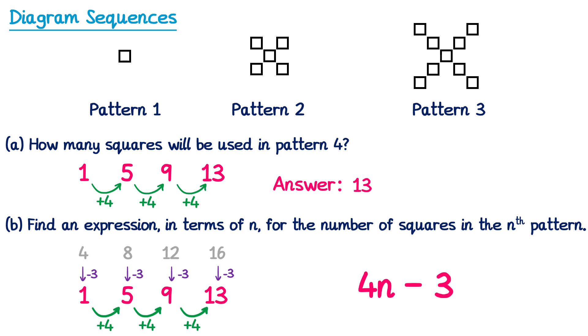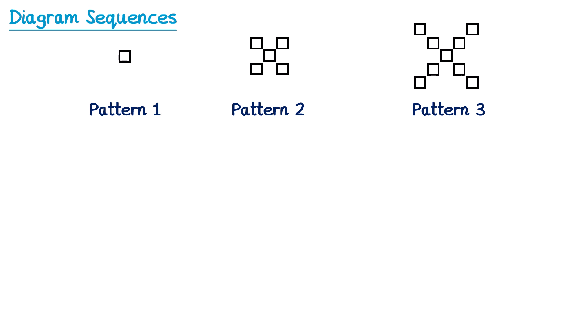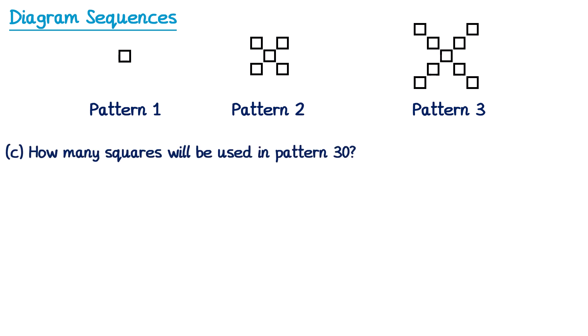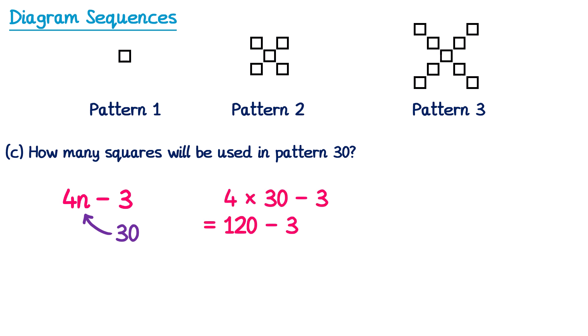For part c: how many squares will be used in pattern 30? We bring back the nth term, which was 4n subtract 3. The nth term can be used to work out any number in the sequence. Since we want pattern number 30, we substitute n for 30. So we need to do 4 lots of 30 subtract 3. 4 times 30 is 120, so it's 120 subtract 3, which is 117. So the answer is 117 squares.